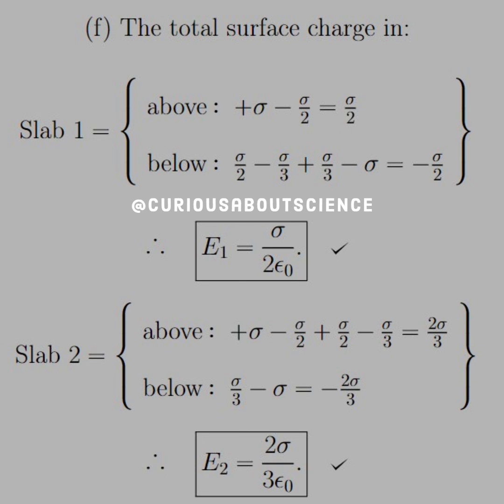So for slab 1, the charge above is literally everything above it, so that's just plus sigma minus sigma over 2, which yields sigma over 2. Below is a little more complicated because we have to do the lower bound charge and everything in slab 2 and the bottom plate. But indeed, we do end up with the electric field in slab 1 that we found earlier.